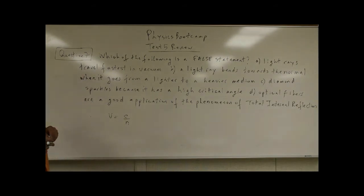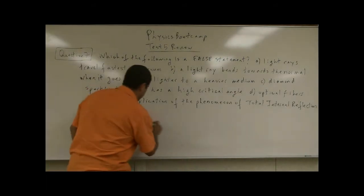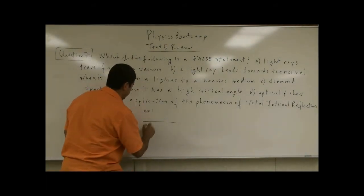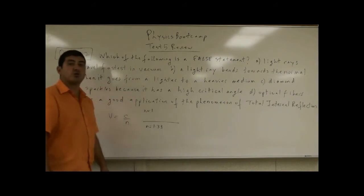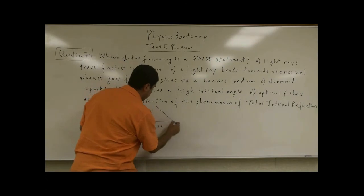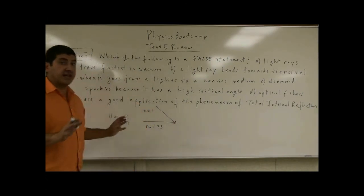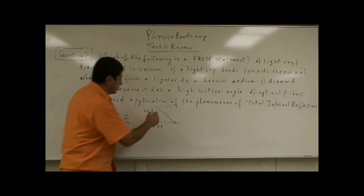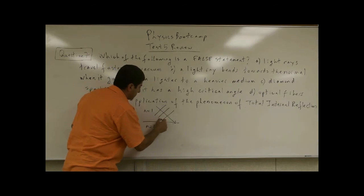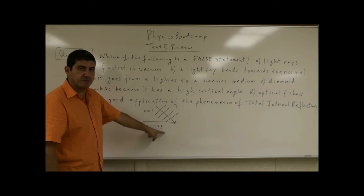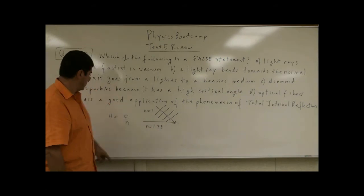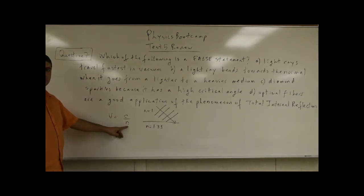B: a light ray bends towards the normal when it goes from a lighter to a heavier medium. So if you have an index of refraction of 1 and an index of refraction of 1.33, such as water, the beam of light comes in. If you forget the answer to this question, just draw a wavefront and ask yourself: this part of the wavefront enters the medium—what happens to it? It slows down, right? With a certain index of refraction, it slows down.